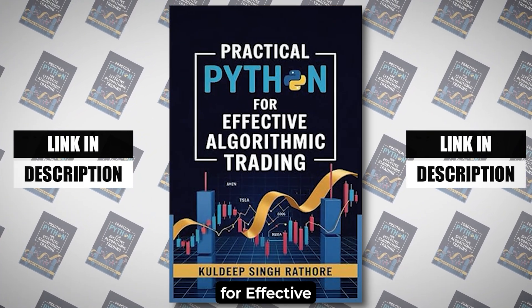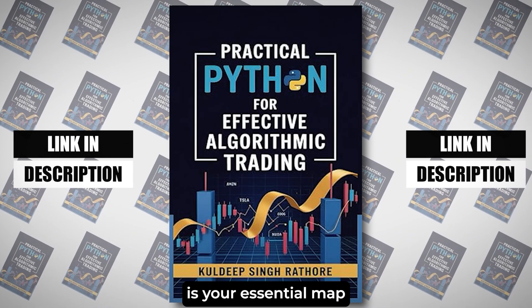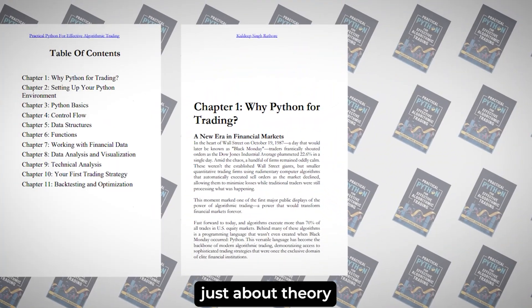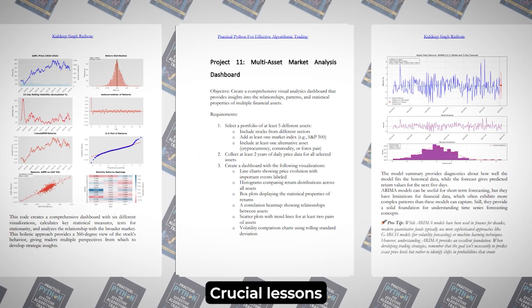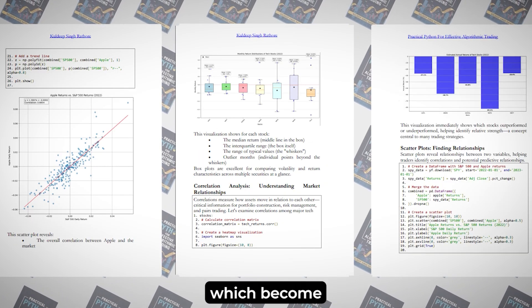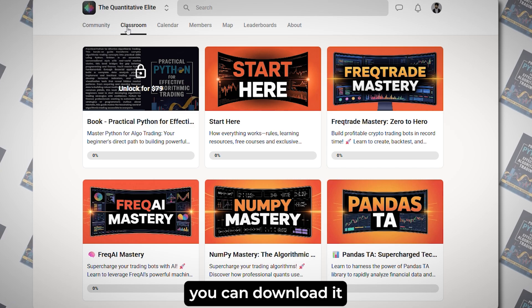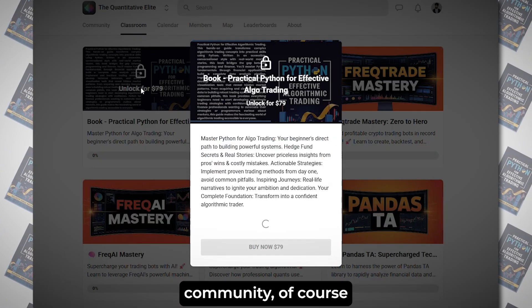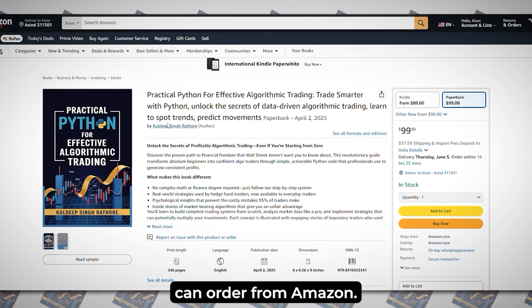My book, 'Practical Python for Effective Algorithmic Trading,' is your essential map. This isn't just theory — it's filled with compelling stories from the trenches, crucial lessons from mistakes which become your shortcuts, and all the technical essentials you need to build with confidence. If you want the ebook, you can download it from the school community with a discount. If you want the hard print, you can order from Amazon.